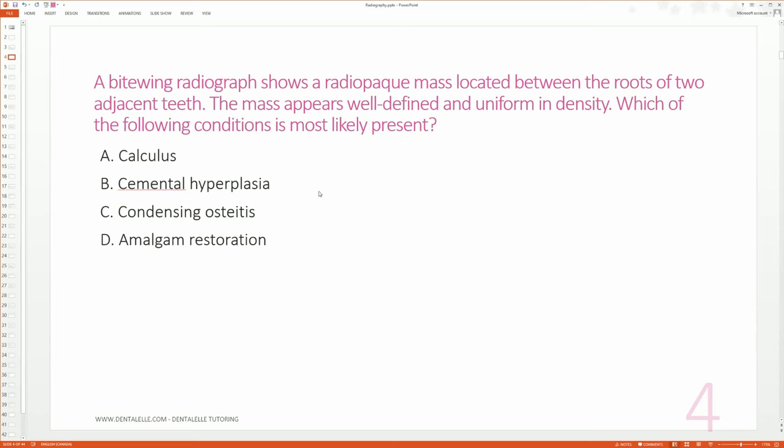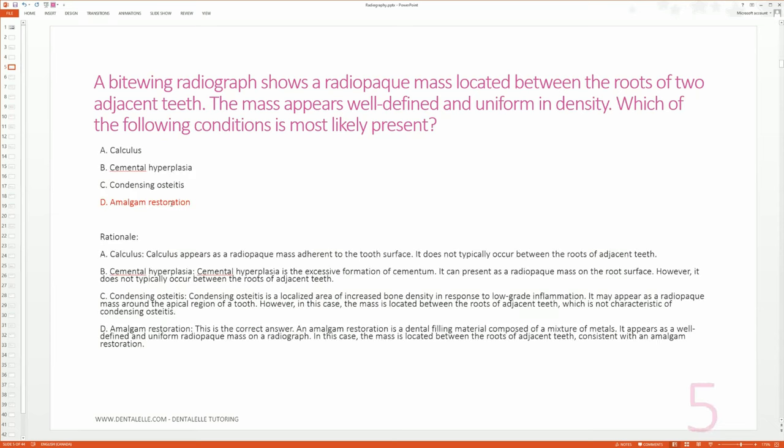Okay, let's talk about the answer. The correct answer is going to be D, amalgam restoration. I was trying not to give it away as I was talking about it. But let's say though we were talking about A, and you said to yourself, 'Oh well, that sounds pretty good.' Now, calculus appears as a white mass, yes, to the tooth surface, but it doesn't typically occur between the roots of adjacent teeth.